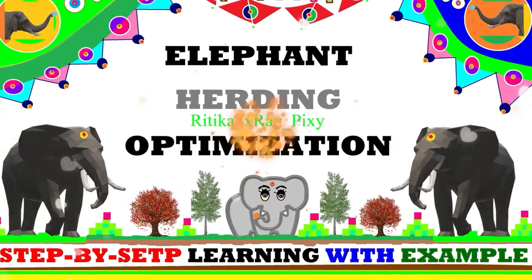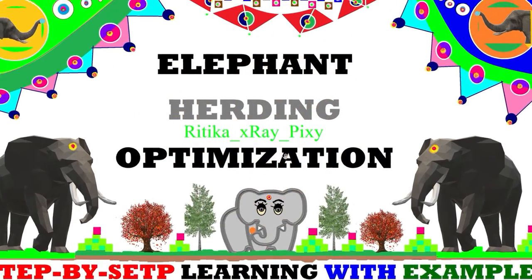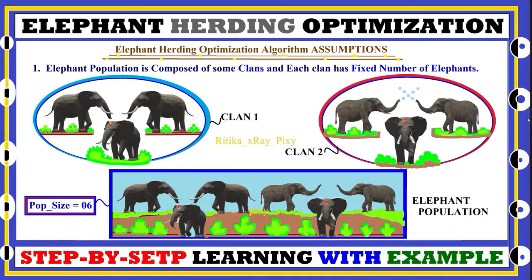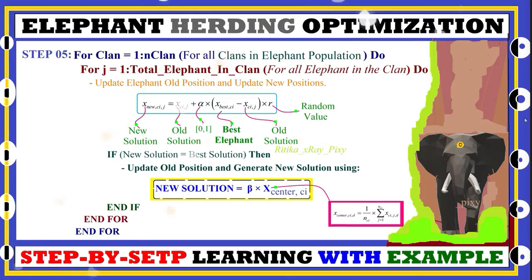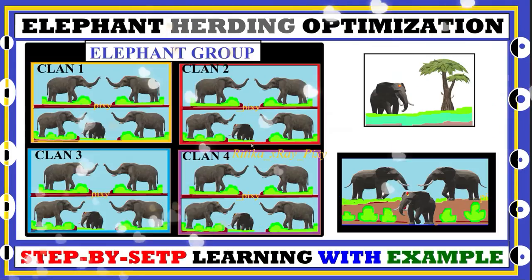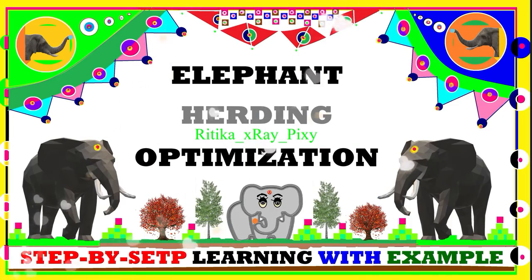This video is based on the Elephant Herding Optimization algorithm. We can use this algorithm to solve different optimization problems. In this video we will try to understand what this algorithm is all about, how it is working, various steps used in this algorithm, mathematical models to update agent positions in the search space, and the algorithm flowchart step by step.